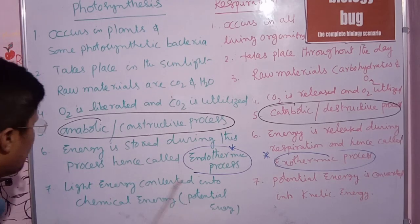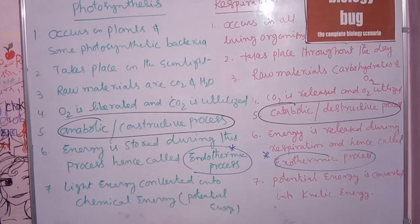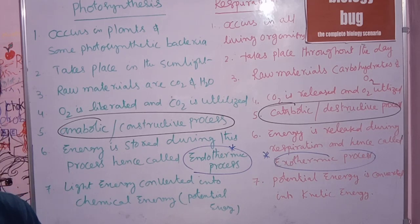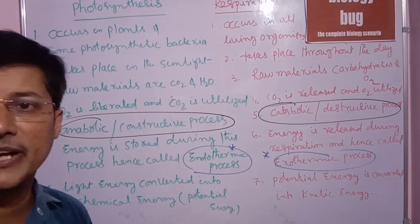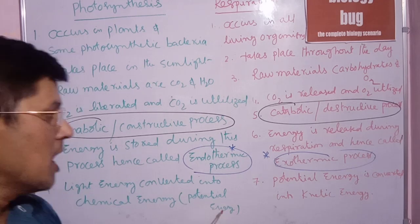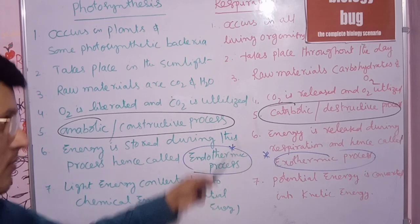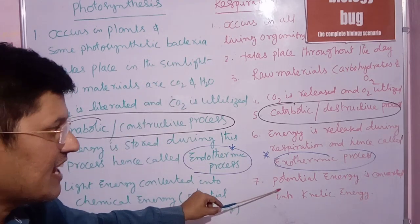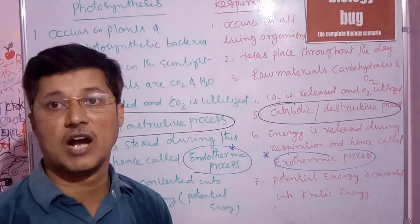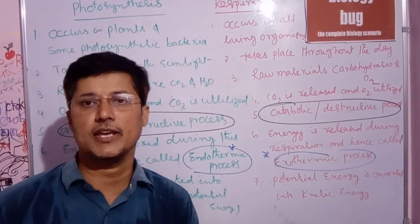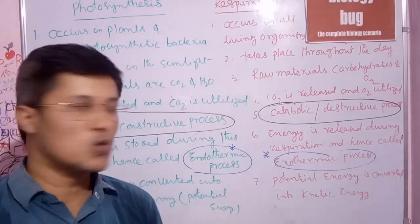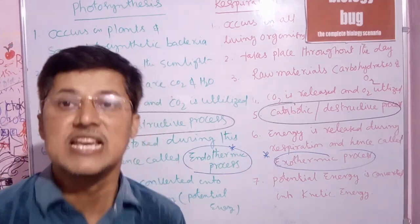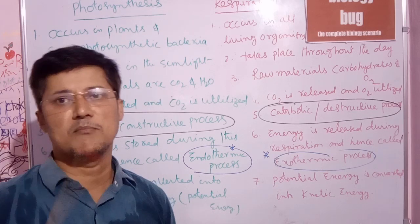In photosynthesis, light energy is converted into chemical energy — specifically into carbohydrates, which store energy as potential energy. In respiration, that chemical potential energy stored in glucose is converted into kinetic energy, which is usable energy for the organism.